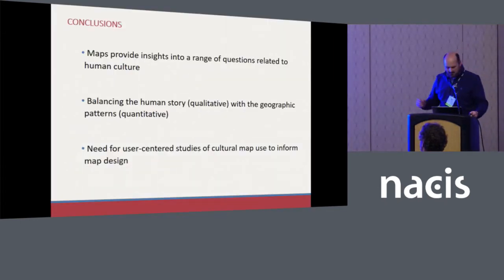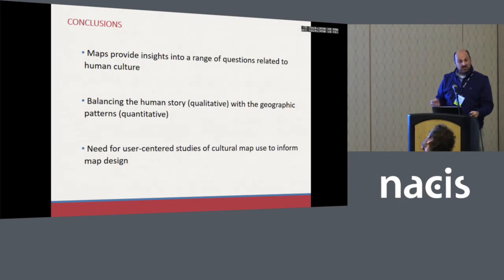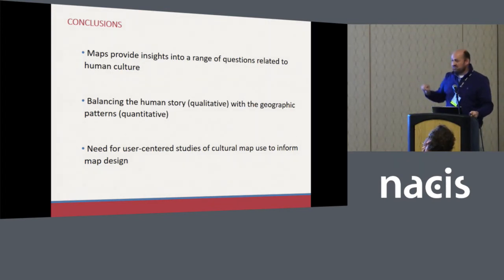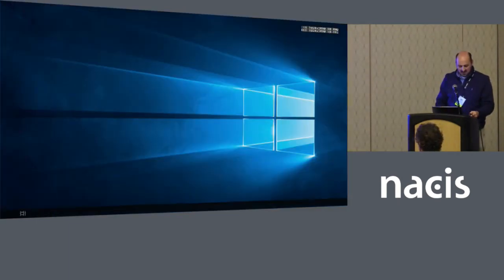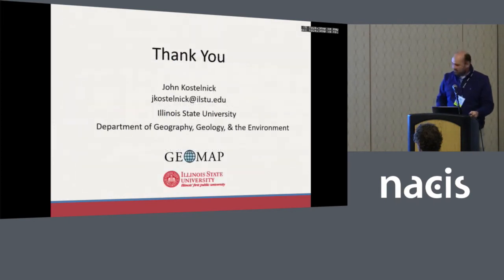These maps can provide a lot of insights into a range of questions related to human culture. The challenge is balancing the human story — the qualitative — with the geographic patterns we often want to see in a statistical thematic map. What these questions have raised for me more than anything is the need for user-centered studies to look at things related to uncertainty or the nature of boundaries, and whether map users understand that or if it's best not to go down that road. Thank you again for your patience with the technology.